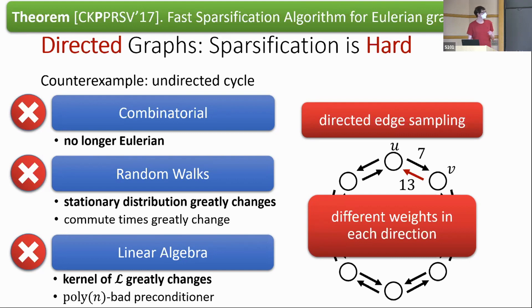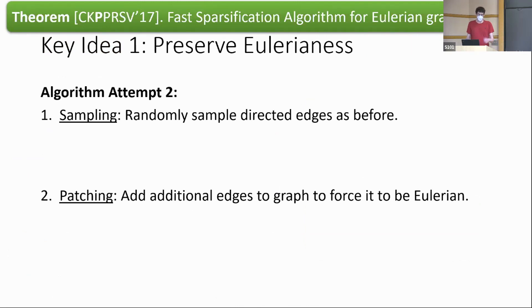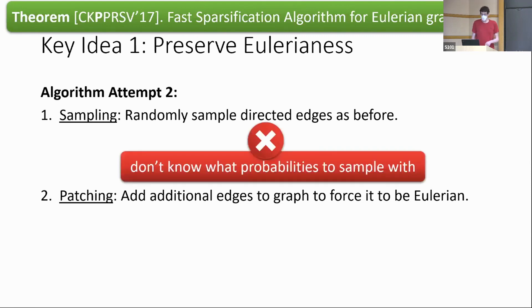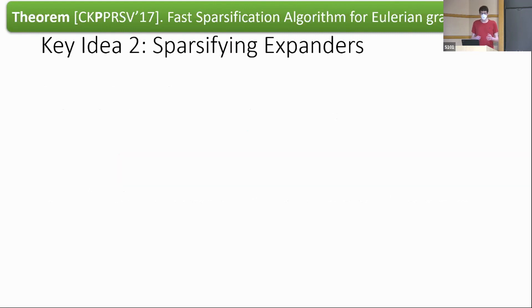These perspectives are all equivalent, so that approach is not right. The first key idea is to preserve the Eulerian property explicitly. Eulerian graphs have a known stationary distribution — proportional to degrees, just like in the undirected case — so preserving Eulerian-ness explicitly prevents one bad thing from happening. A second algorithm attempt samples randomly as before but adds additional edges to the graph to force it to be Eulerian, explicitly preserving the stationary distribution. Unfortunately there are still two problems: we don't know what probabilities to sample with, and the error from adding edges may be very large.